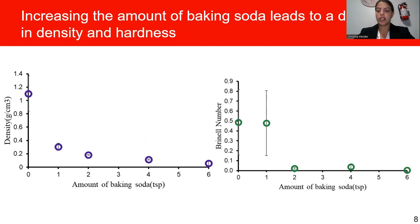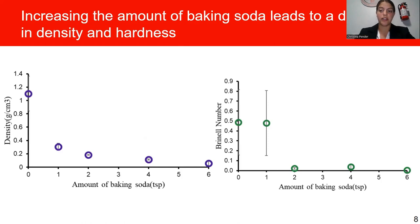When looking at the hardness of the candy, we would expect this to decrease as well when we increase the amount of baking soda. This is because when there are more bubbles in the candy, the candy becomes softer or more brittle. Therefore, when we drop the ball onto the candy, it will leave a bigger indent.